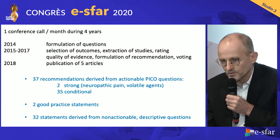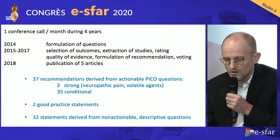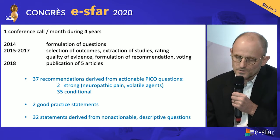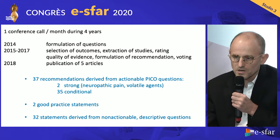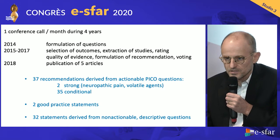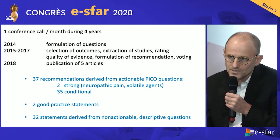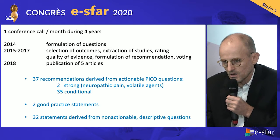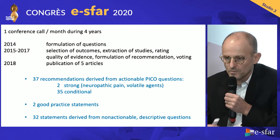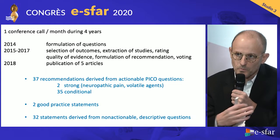We made 35 conditional recommendations, meaning these are not downgraded recommendations, but some did not achieve the complete quality of evidence to be upgraded to strong. We also made two good practice statements — particularly that each center needs a written protocol for management of pain and sedation — and 32 statements derived from non-actionable descriptive questions, for example, reviewing predisposing factors for pain or delirium.